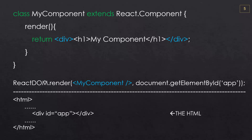Down here we're going to use the ReactDOM.render method. We're going to pass in MyComponent in the format of an XML tag, and then the second parameter is going to be where we want to insert that — here we're saying we want to find the element with the ID of 'app' and insert it into that. So this would be in your HTML as a div with the ID of app, and that's where our component would show up.